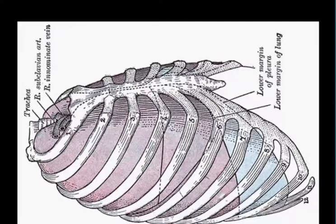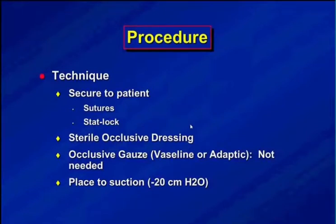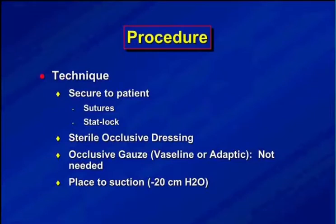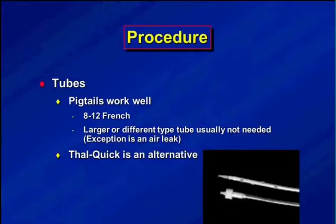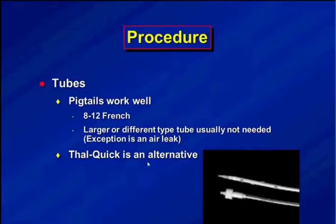We secure the catheter with sutures and put a dressing on — no Vaseline or Adaptic needed. When surgeons open up the intercostal muscles they need occlusive dressings to prevent air from sucking in, but with our technique that doesn't happen. We place suction at minus 20 centimeters of water. For tube type, pigtails work well — a standard pigtail catheter, typically 8 to 12 French depending on age. Under one year, use an 8 French; over five years, a 12 French. We do not need the big surgical tubes — 24, 32, or 36 French. The Salt Quick tube is another option: looks more like a surgical tube but smaller, 12 French, goes in over a wire.